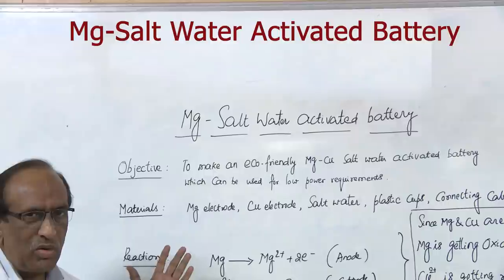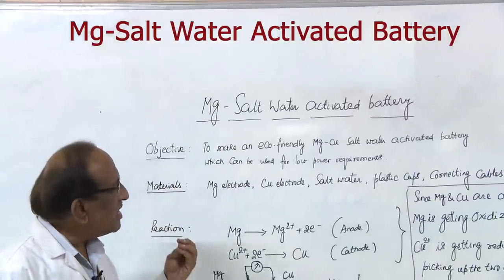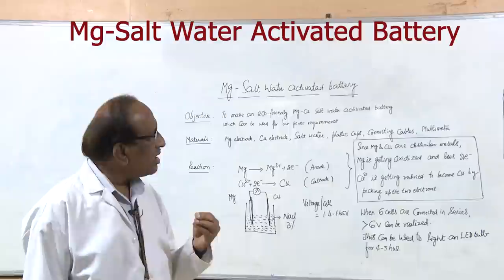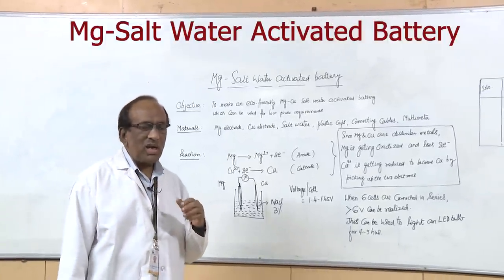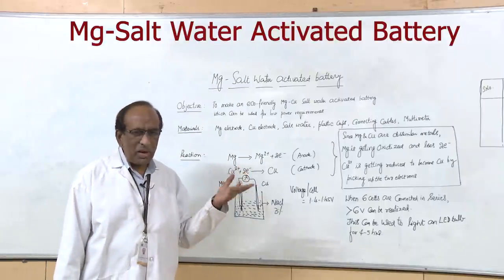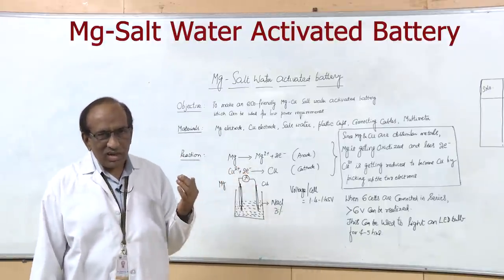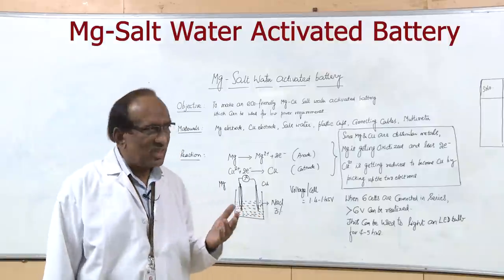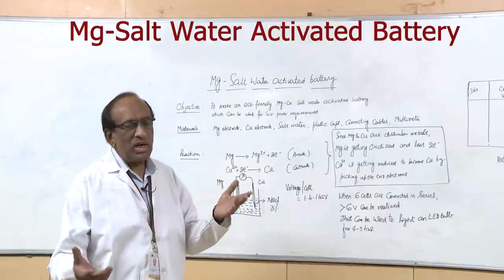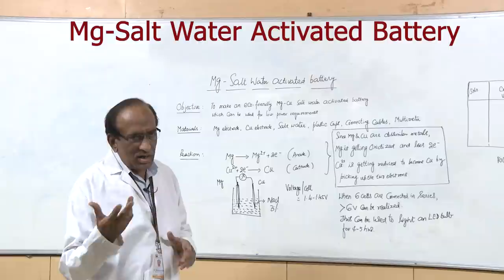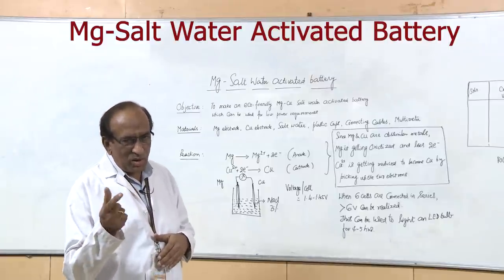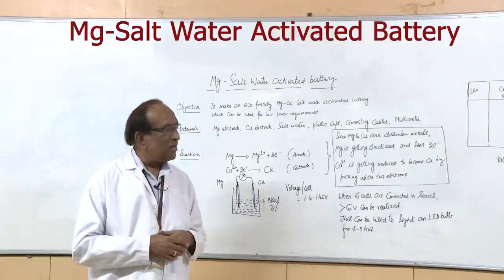Today we are going to do a demonstration of an experiment which is a very simple magnesium salt water activated battery, which is an eco-friendly system and it can be used in any place without any requirement of electrical energy plug points. Depending on the number of cells you are connecting in series you can derive that much voltage. It can light an LED lamp, it can run a small fan with a small motor and various other things can be done for about 3 to 4 hours time.